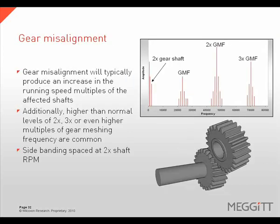Gear misalignment will produce an increase in running speed harmonics of the affected gears. Higher than normal levels of 2x, 3x, or even higher multiples of gear mesh frequency are common, with sidebanding spaced at 2 times the shaft's rotational speed.